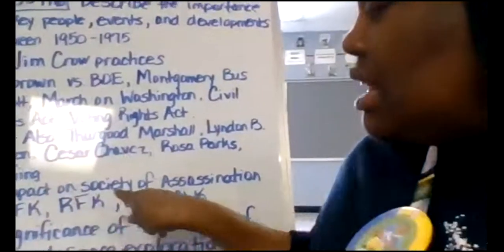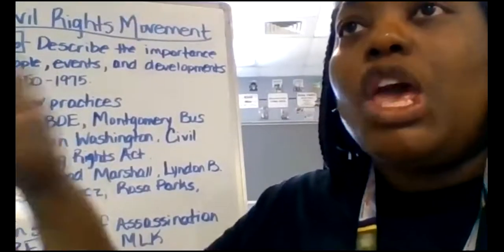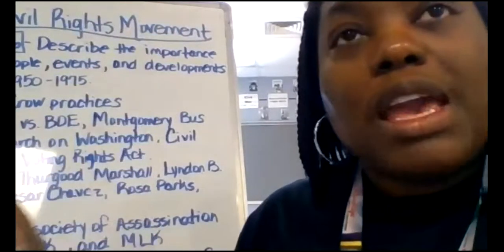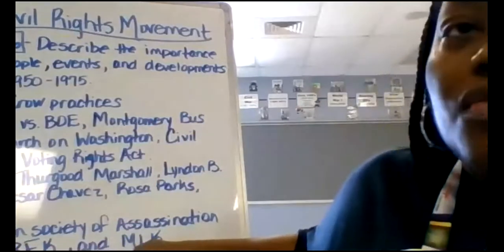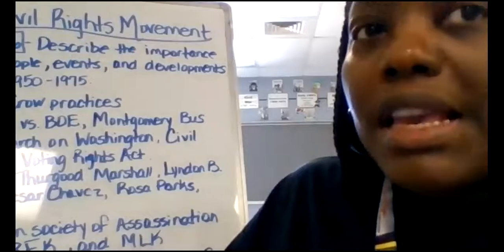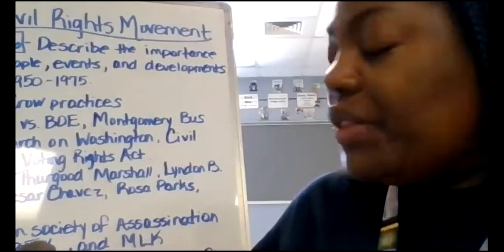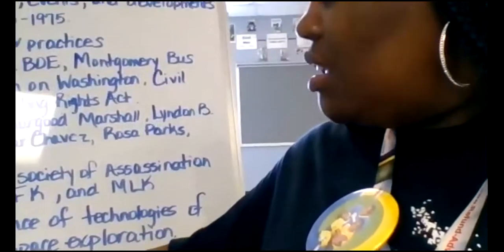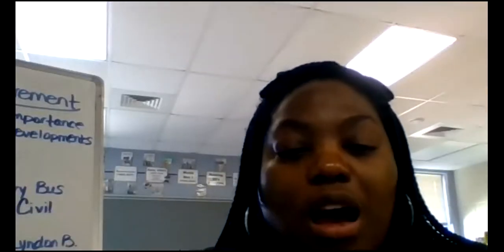C is the impact on society of the assassinations — remember JFK, Robert F. Kennedy, and MLK, Dr. King. Those three main people were assassinated. Even after the assassination of Dr. King, a lot of riots happened because people were very upset. And D is the significance of technologies of TV and space exploration. We covered a lot of things in that standard, and I think you guys have done a great job.